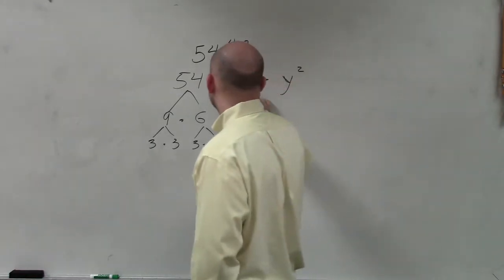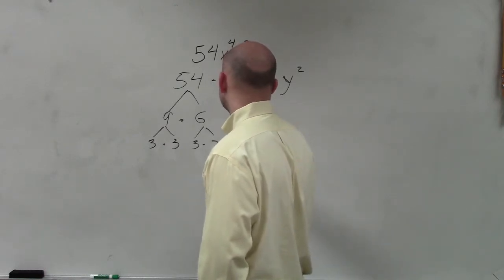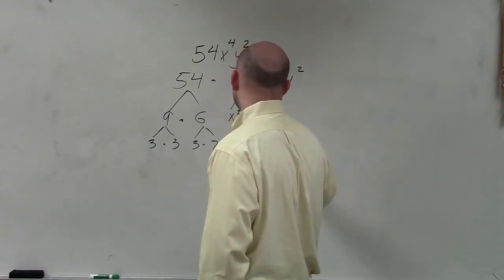Now, for x to the fourth, I can break that down into x squared times x squared, and then break that down further into x times x and x times x.